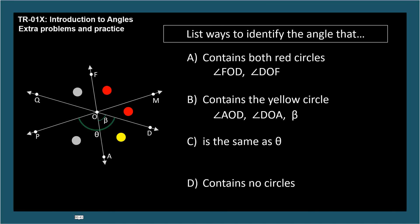List ways to identify the angle that's the same as Theta. Angle POD or Angle DOP. List ways to identify the angle that contains no circles. Angle POQ or Angle QOP.